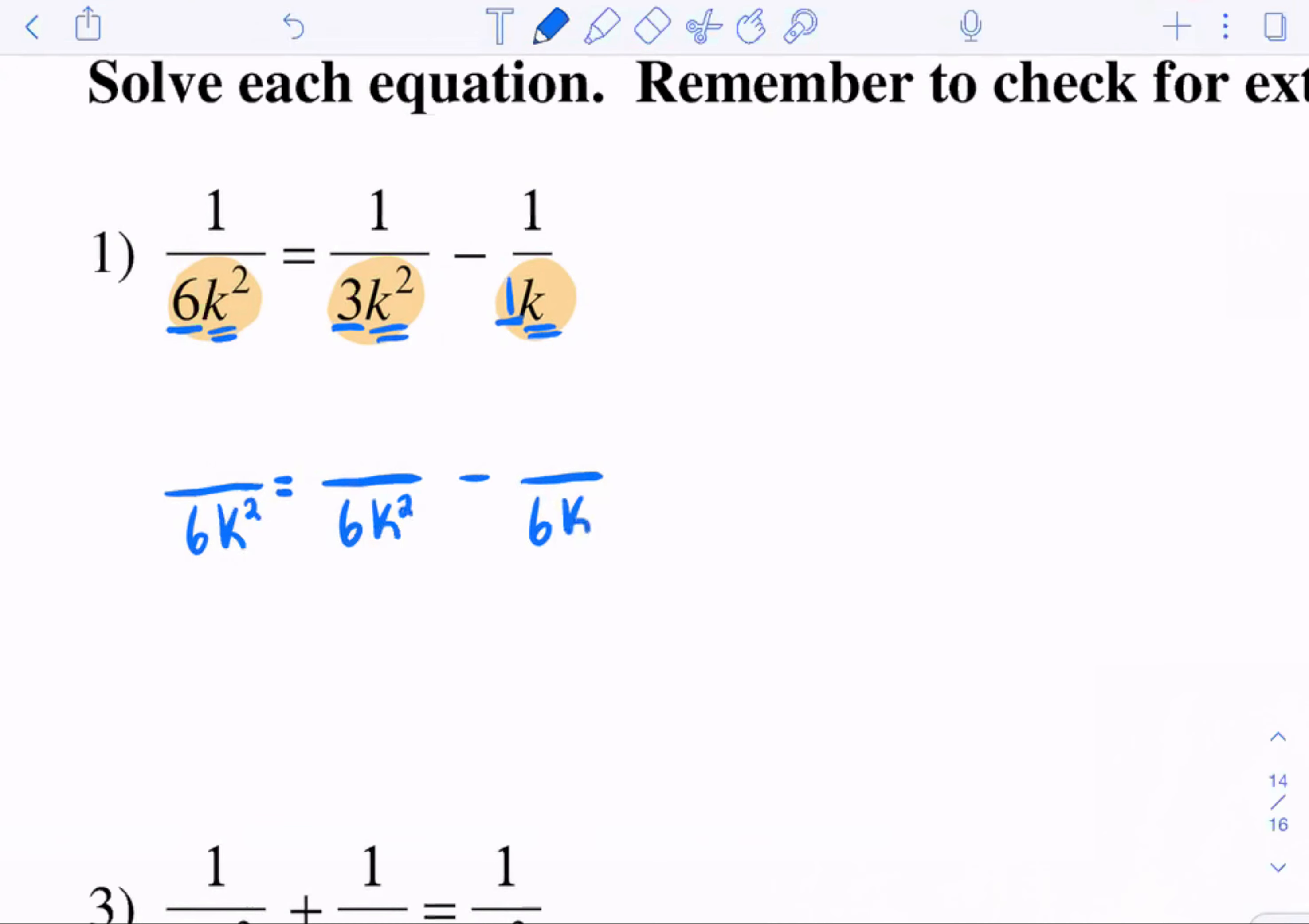Now we have to figure out what should I multiply six K squared with to get six K squared? It already is six K squared. So you only have to multiply it by one. One times one is one. Now if you look at the next fraction, three times what is six? The number two. And then K squared times what is K squared? Times one. So here, I only need to multiply by two. So one times two is two.